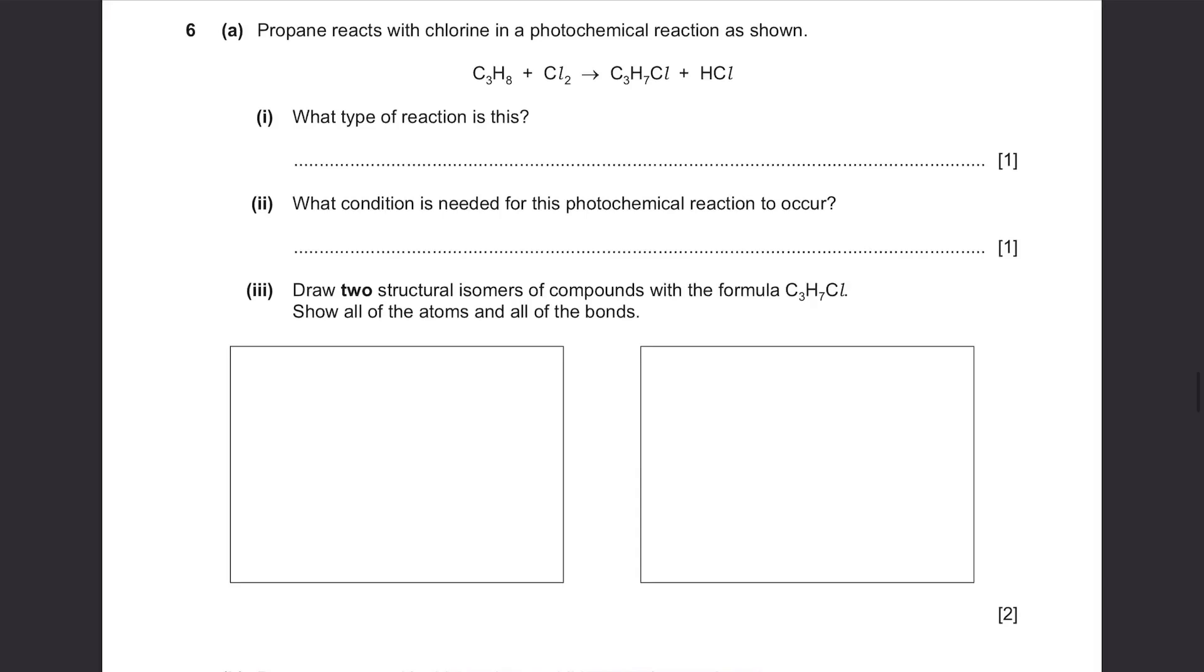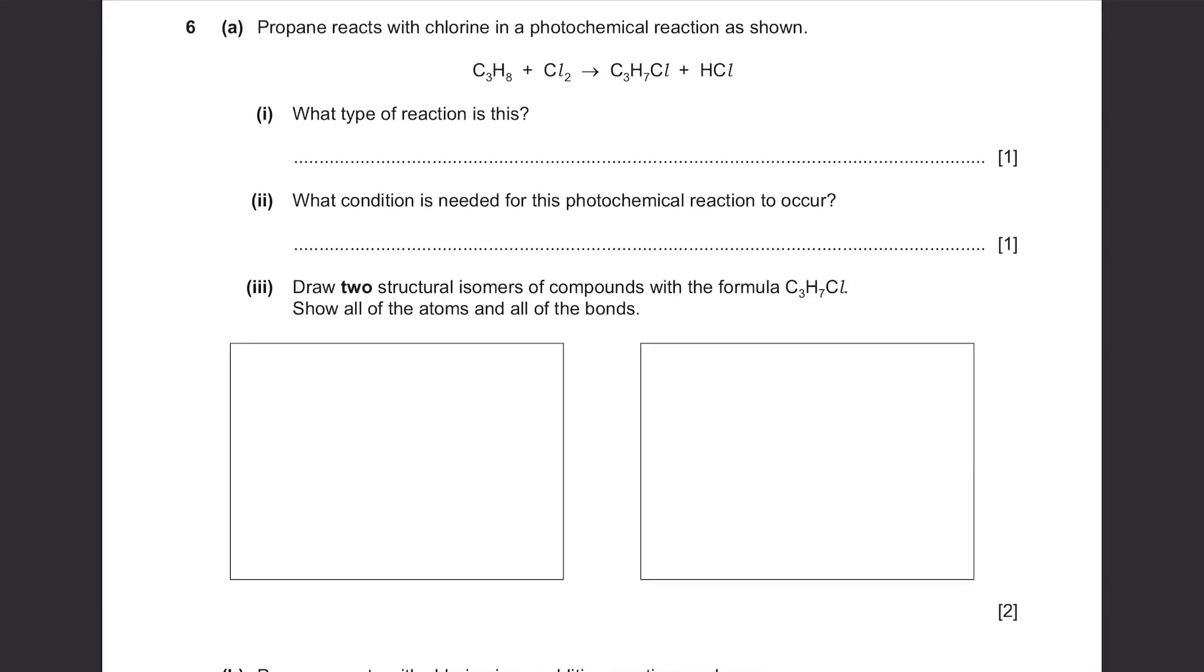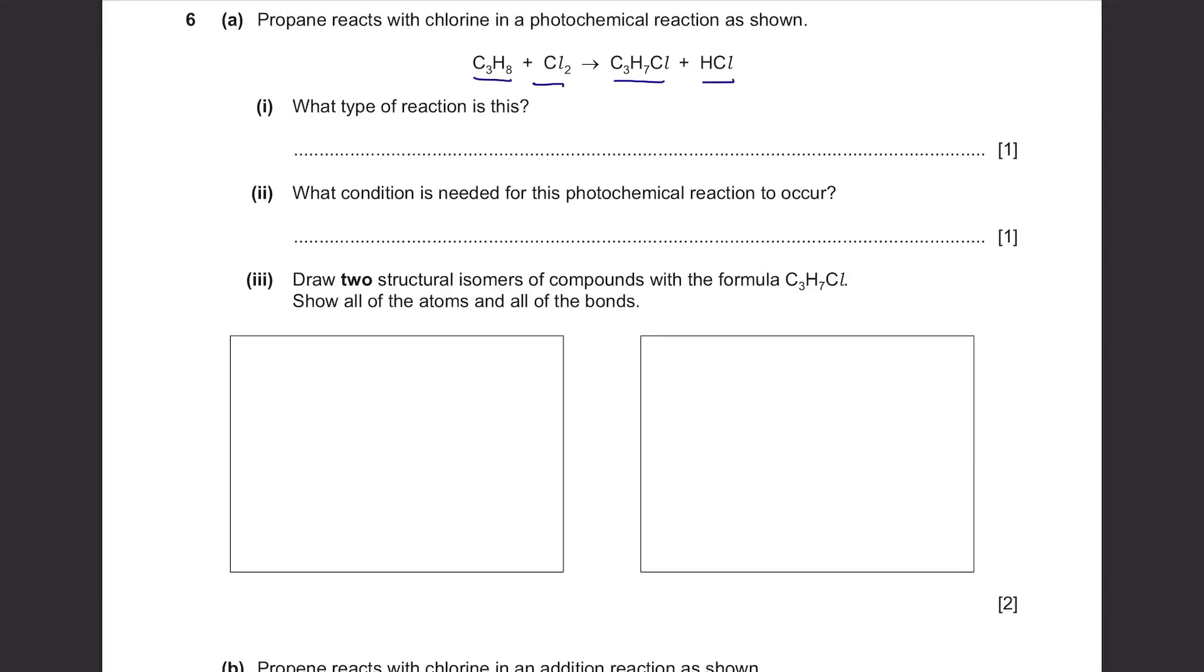Question 6 Part A: Propane reacts with chlorine in a photochemical reaction as shown. What type of reaction is this? You can see that one of the chloride ions has moved here, and the hydrogen ion has been moved here. So it has replaced the hydrogen ion, and it's called the substitution reaction. What condition is needed for this photochemical reaction to occur? The word photo in front here means light. So remember, you need ultraviolet light or ultraviolet radiation for this reaction to occur.